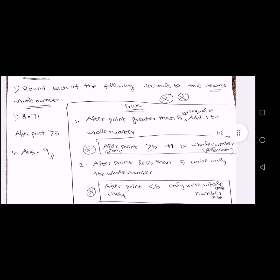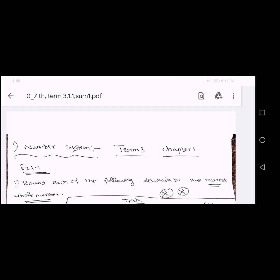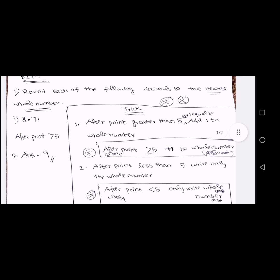First sum: 8.71. After the point, the digit is 7. 7 is greater than 5, so we add plus 1 to the whole number. 8 plus 1 equals 9. Answer is 9.